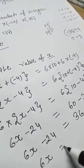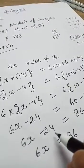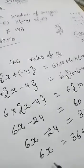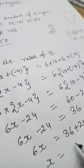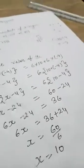6x is equal to 36. Left hand side, look here, minus 24, so right hand side plus 24. So x is equal to 60 upon 6. x is equal to 10. Your answer completed.